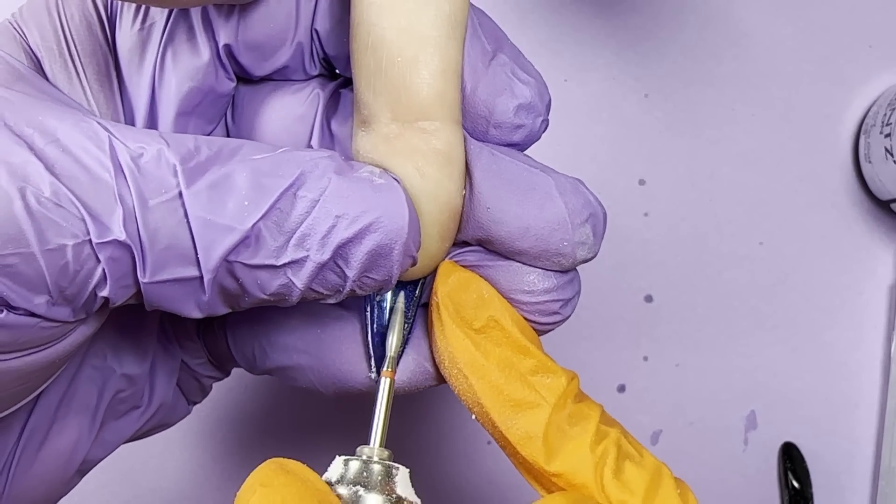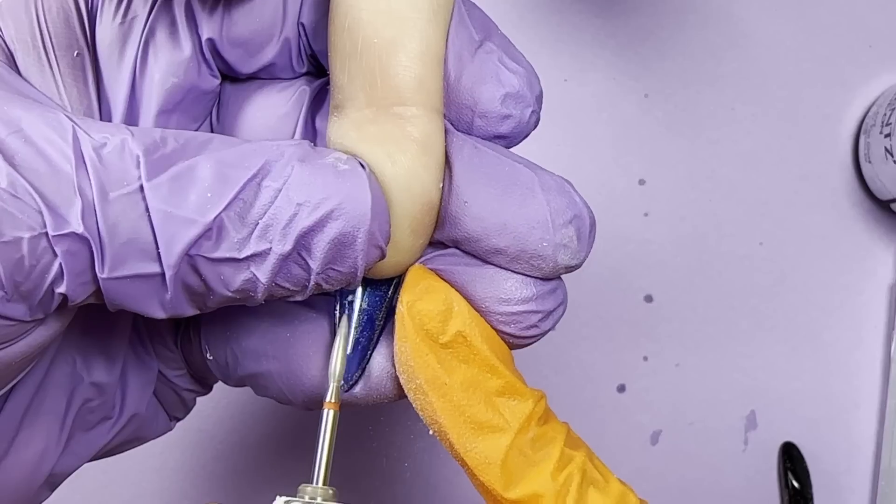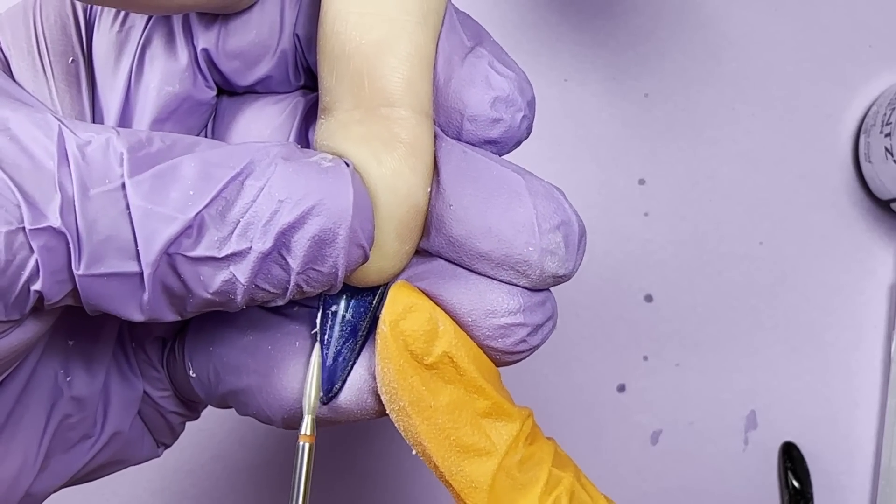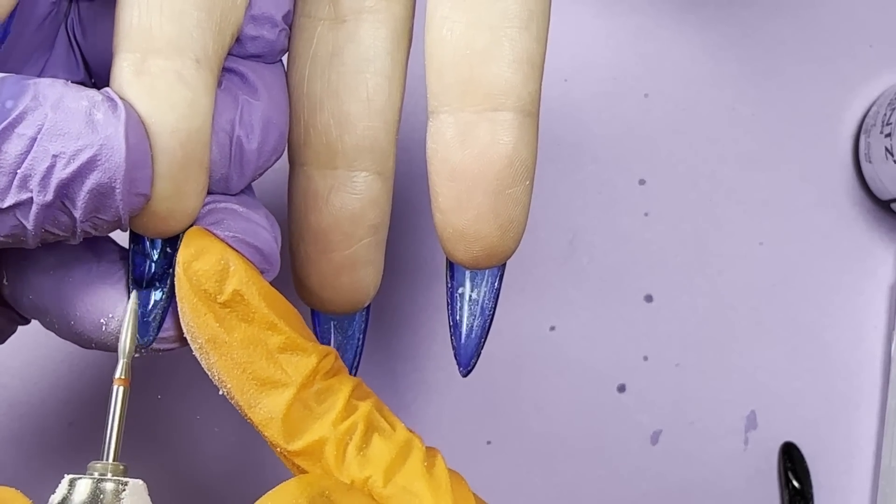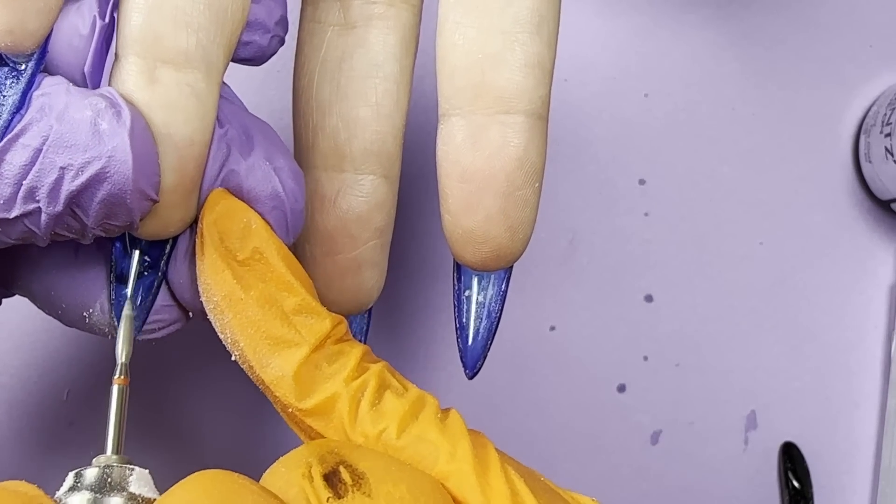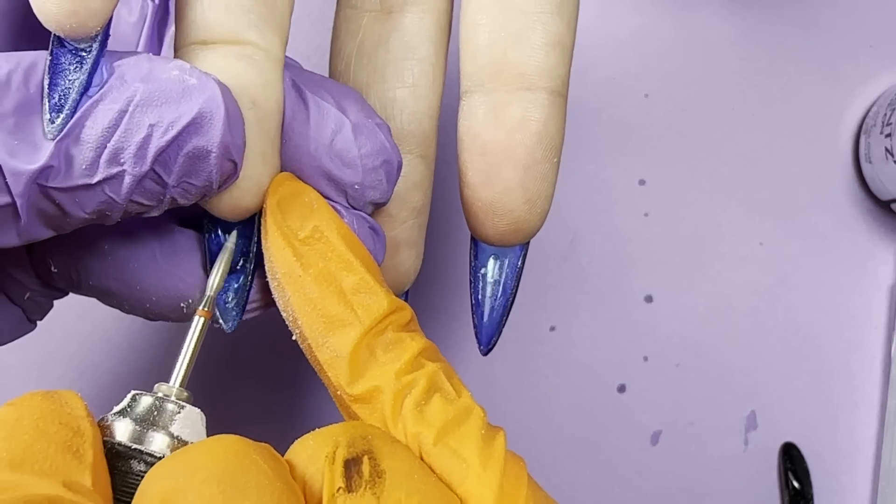After filing and shaping, we were still able to see the numbers of the tips, and since we have a fully transparent design, that's not going to look very well, so we decided to file them off from underneath the nails.